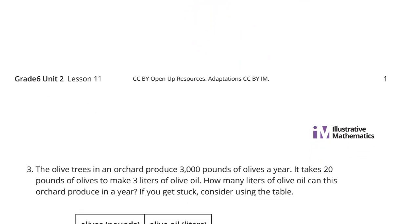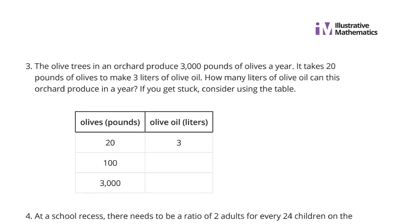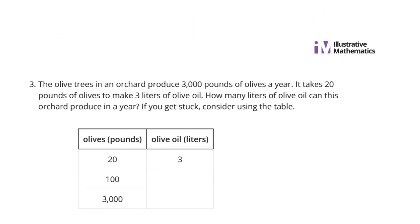Continuing on. Question 3. The olive trees in an orchard produce 3,000 pounds of olives a year. It takes 20 pounds of olives to make 3 liters of olive oil. How many liters of olive oil can this orchard produce in a year? If you get stuck, consider using the table.